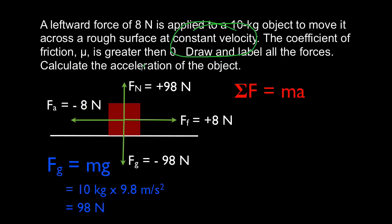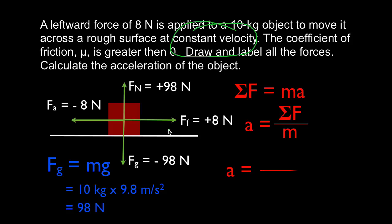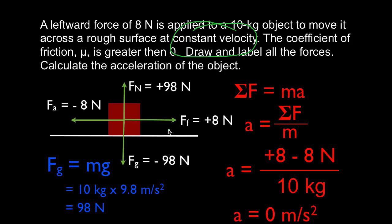Because it's a constant velocity, we know the acceleration is going to be zero. But let's just prove it to ourselves. Acceleration equals the sum of the forces divided by the mass. The sum of the horizontal forces — the friction force and the applied force — is plus 8 plus minus 8, which is zero, divided by 10, equals zero. So the acceleration is indeed zero. The problem told us it was constant velocity, so we knew the acceleration had to be zero, and it did turn out to be zero.